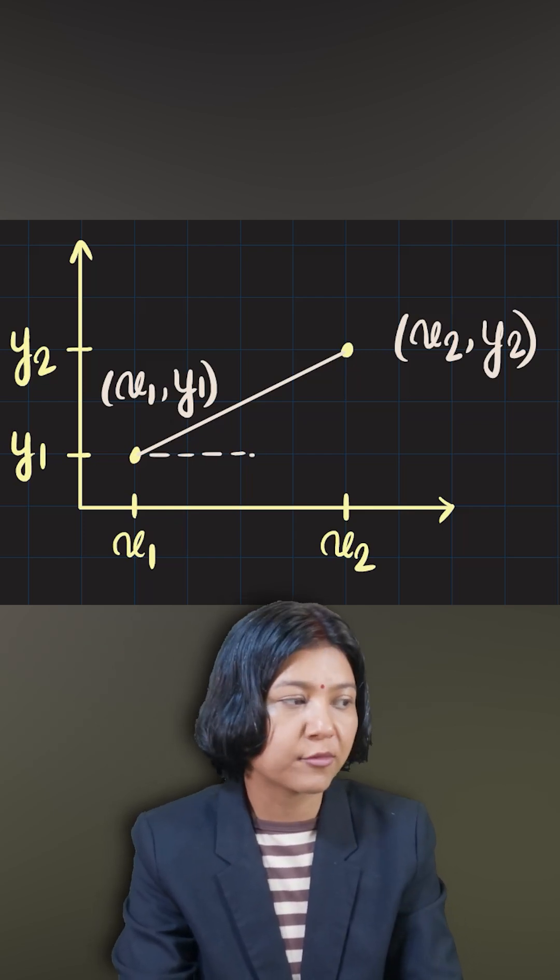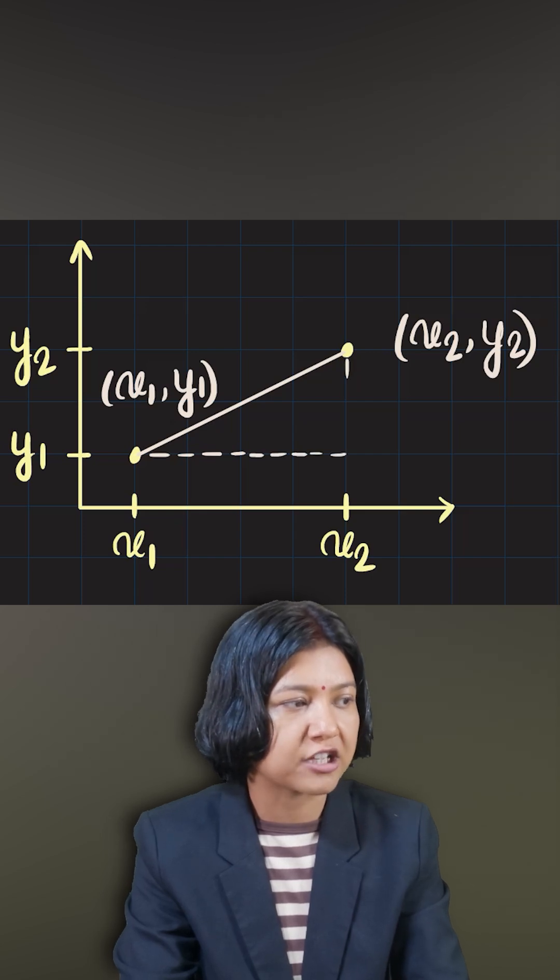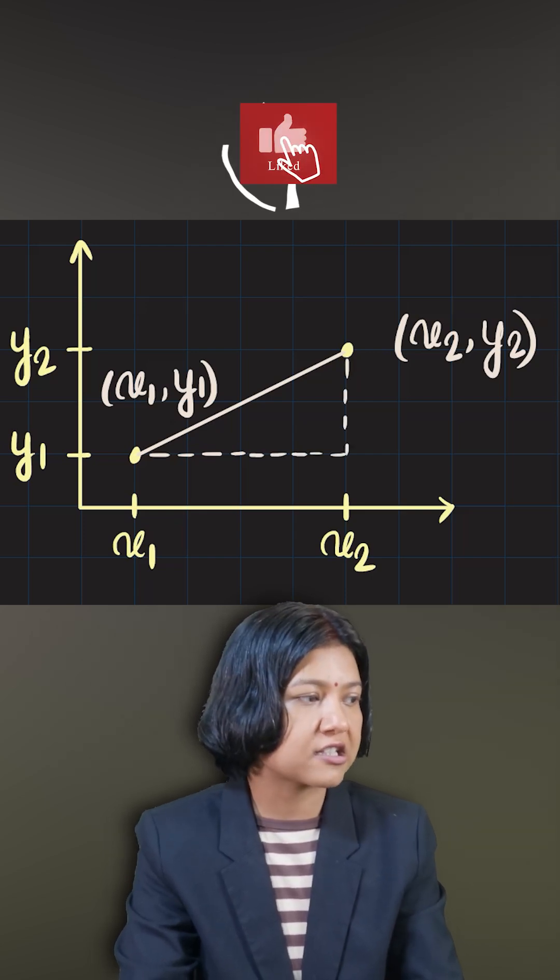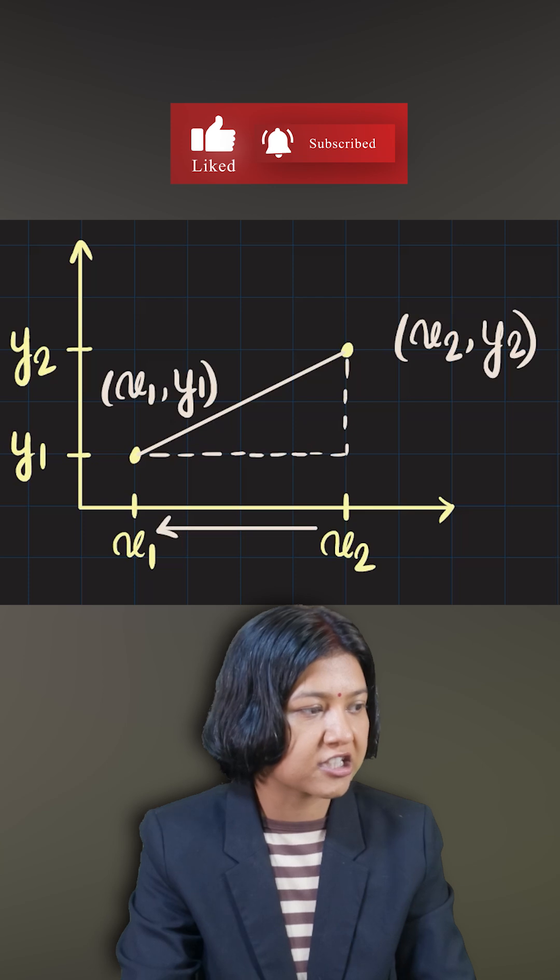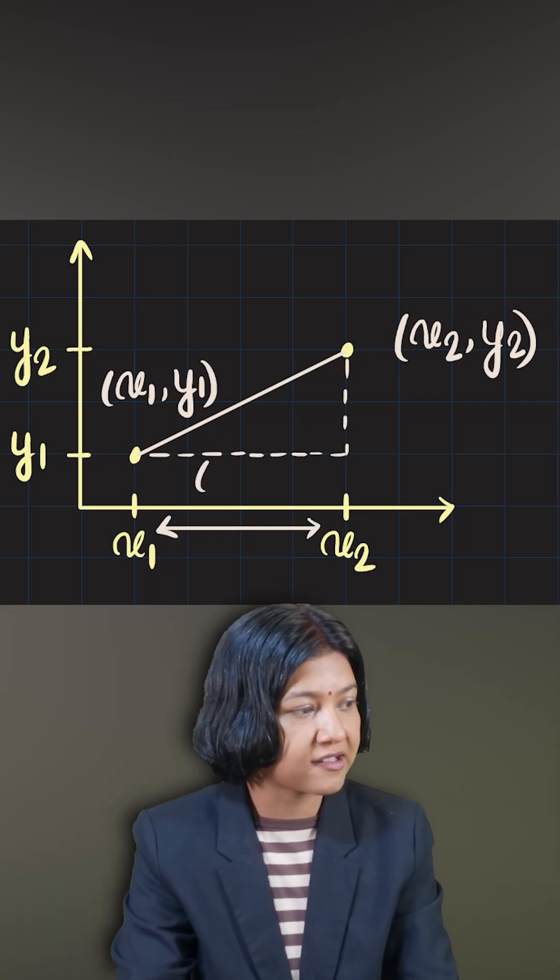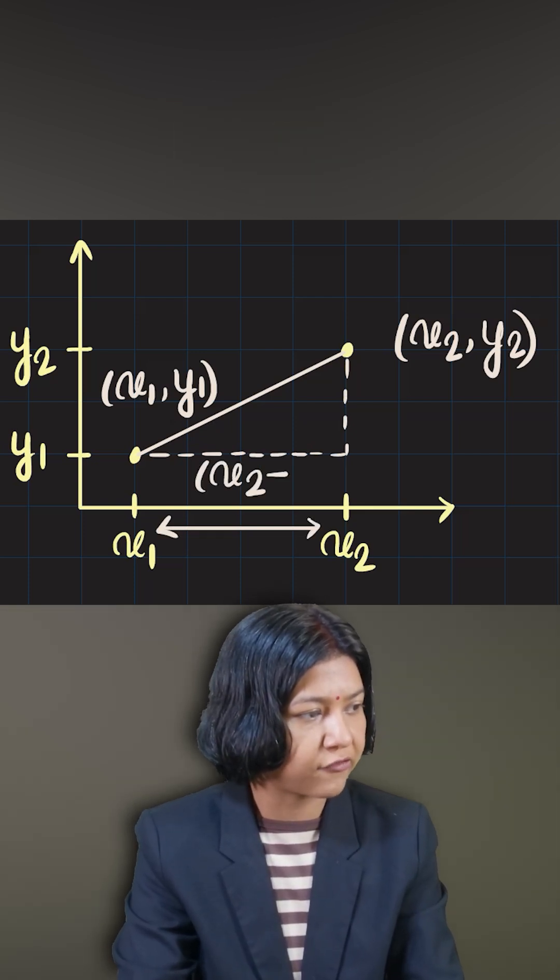So between two points, what I'm going to do, I'm going to find the horizontal distance and the vertical distance. If you look at the horizontal distance, it is just the distance between the two coordinates. So we write this as x2 minus x1, that is our first side.